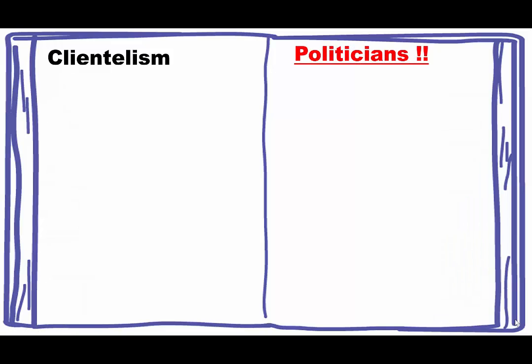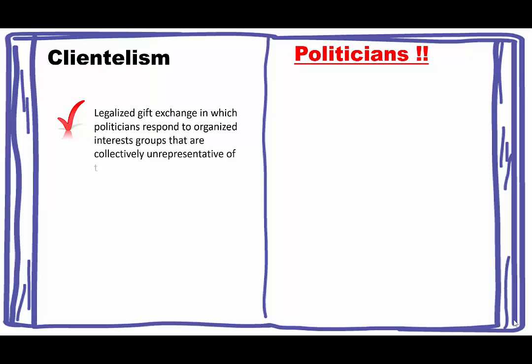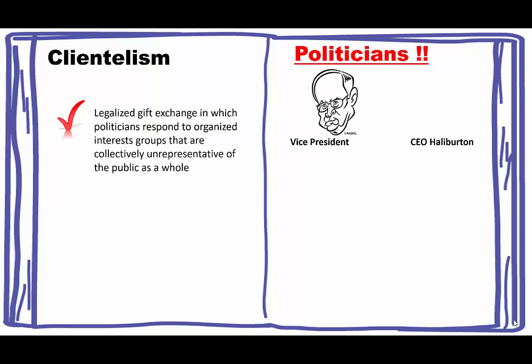The first type is clientelism, and this one is really about the politicians themselves. Fukuyama talked about a legalized gift exchange in which politicians respond to organized interest groups that are collectively unrepresentative of the public as a whole. An example would be if Halliburton were to offer a vice president a CEO position once he or she left their position — they would know that opportunity was going to be open to them.